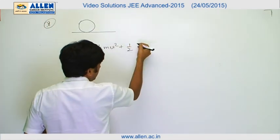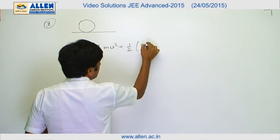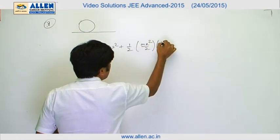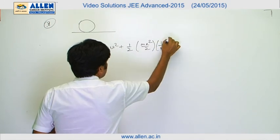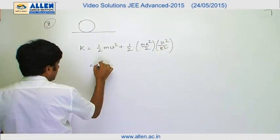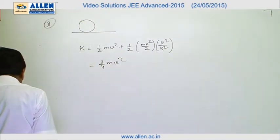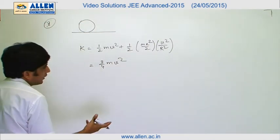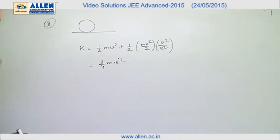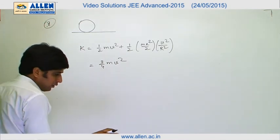And I is mr²/2 and omega is v²/r². From here we get ¾mv². Since in the question it is given that final kinetic energy of the disk is same in both situations, we apply work energy theorem in both cases.